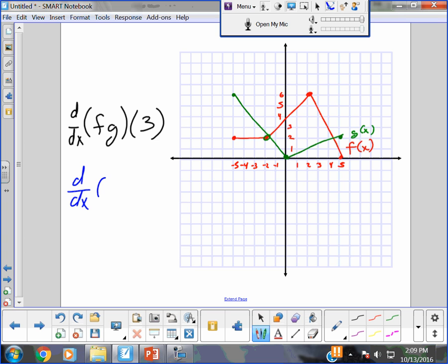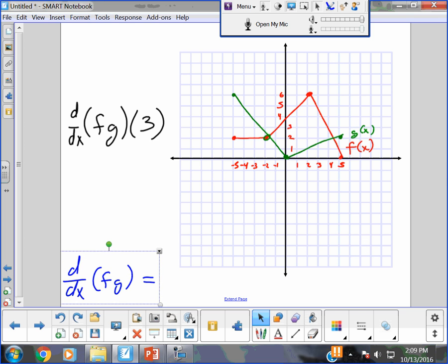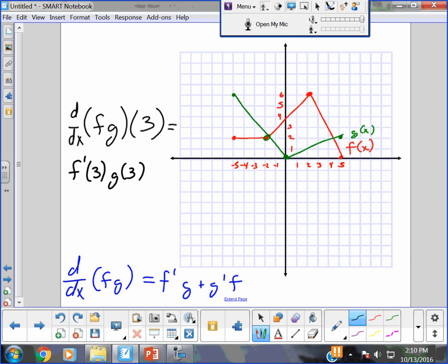How about this? What's d dx of fg? Well, you should have it figured out. It is the product rule. Do you guys agree it's f prime g plus g prime f? Well, now I'm doing it at what value? 3. So if I go back up here and change my color to black, you guys agree it's f prime of 3, g of 3, plus g prime of 3, f of 3.